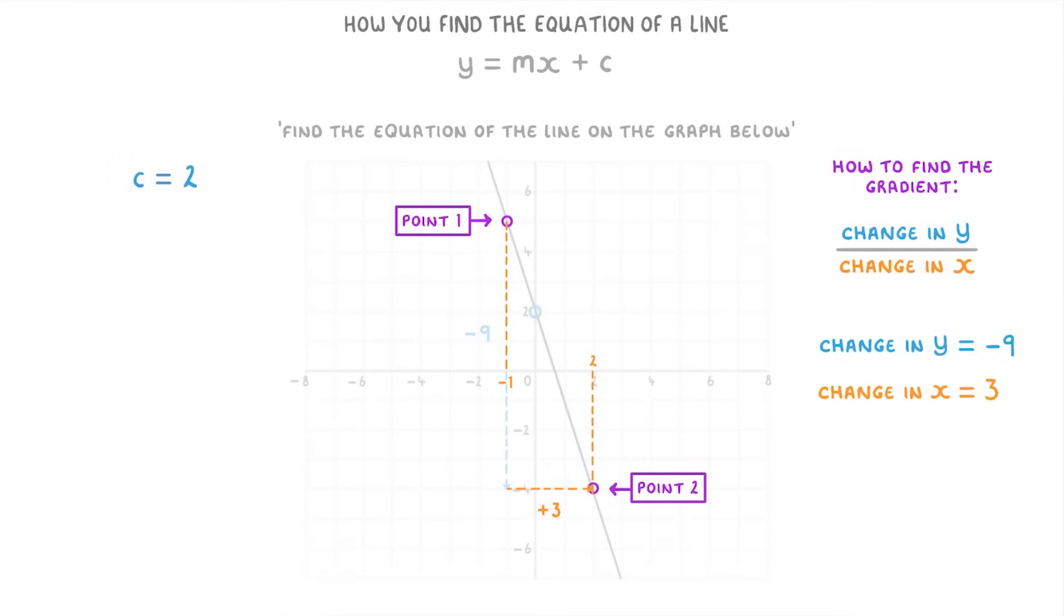This means that to find our gradient we just do the change in y of minus 9 divided by the change in x of 3, which will give us negative 3. So m in our equation is minus 3.